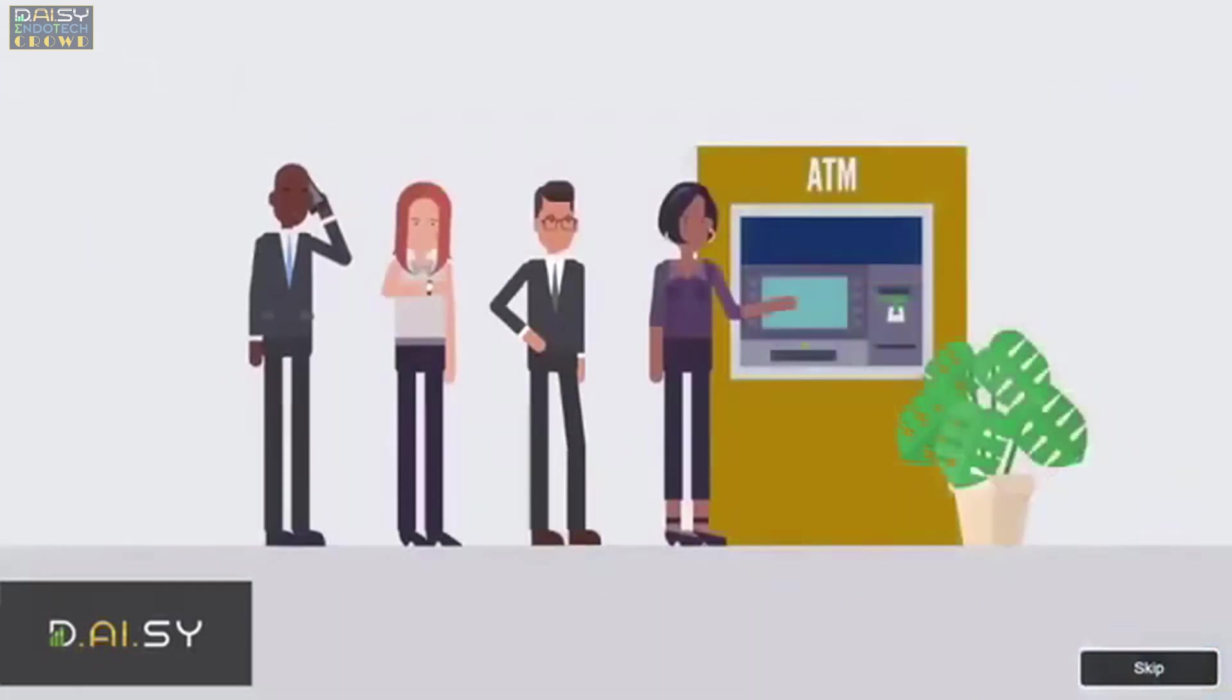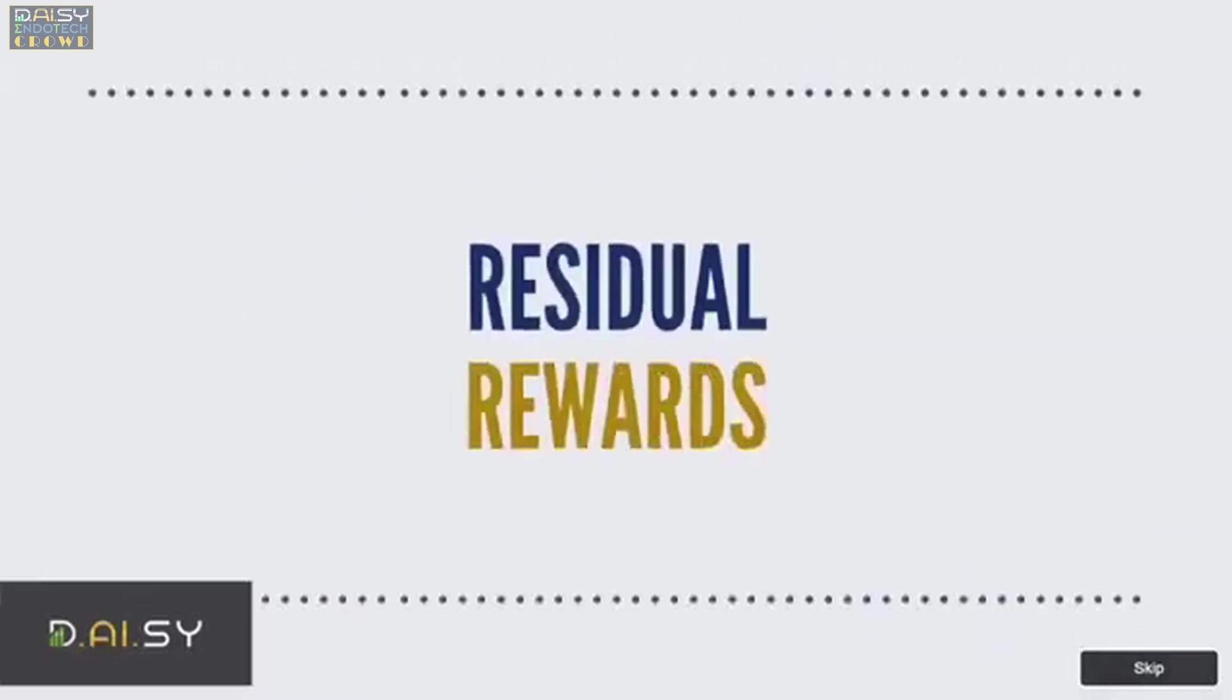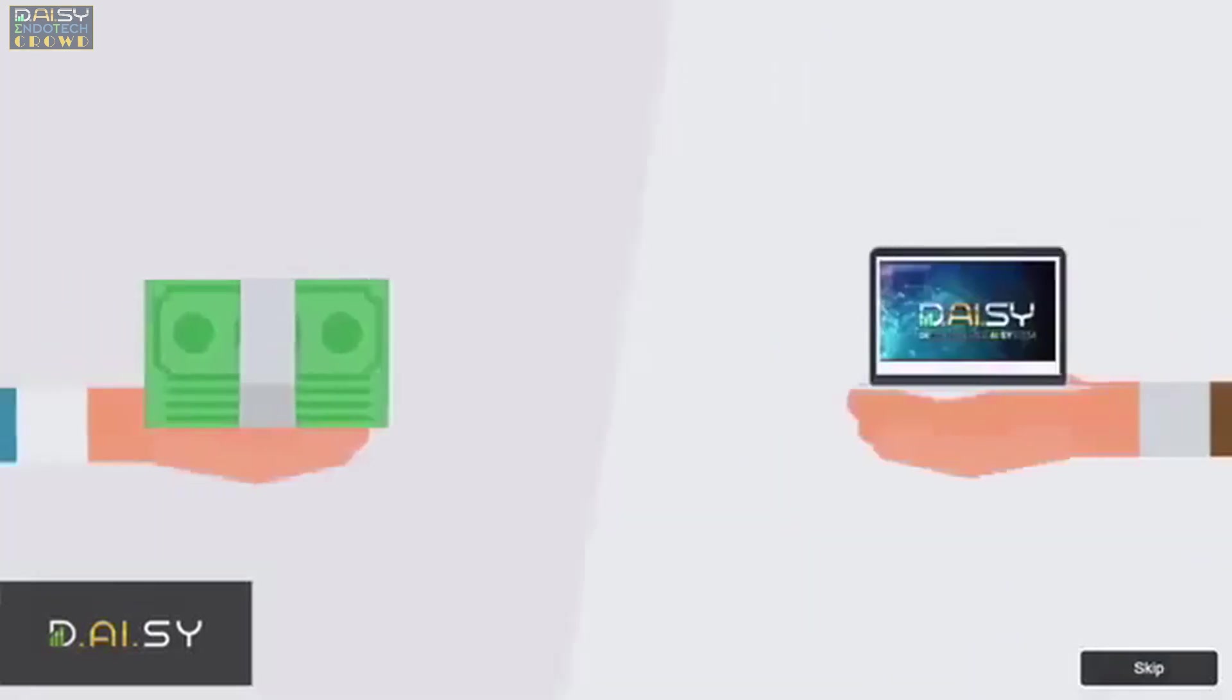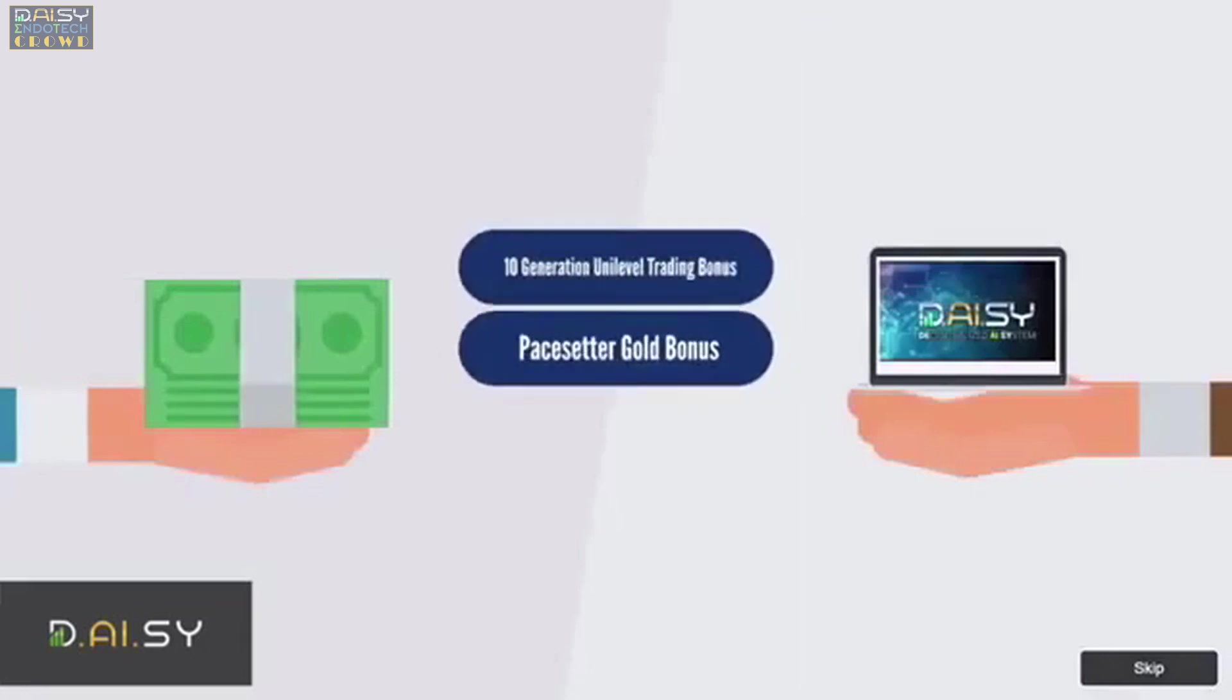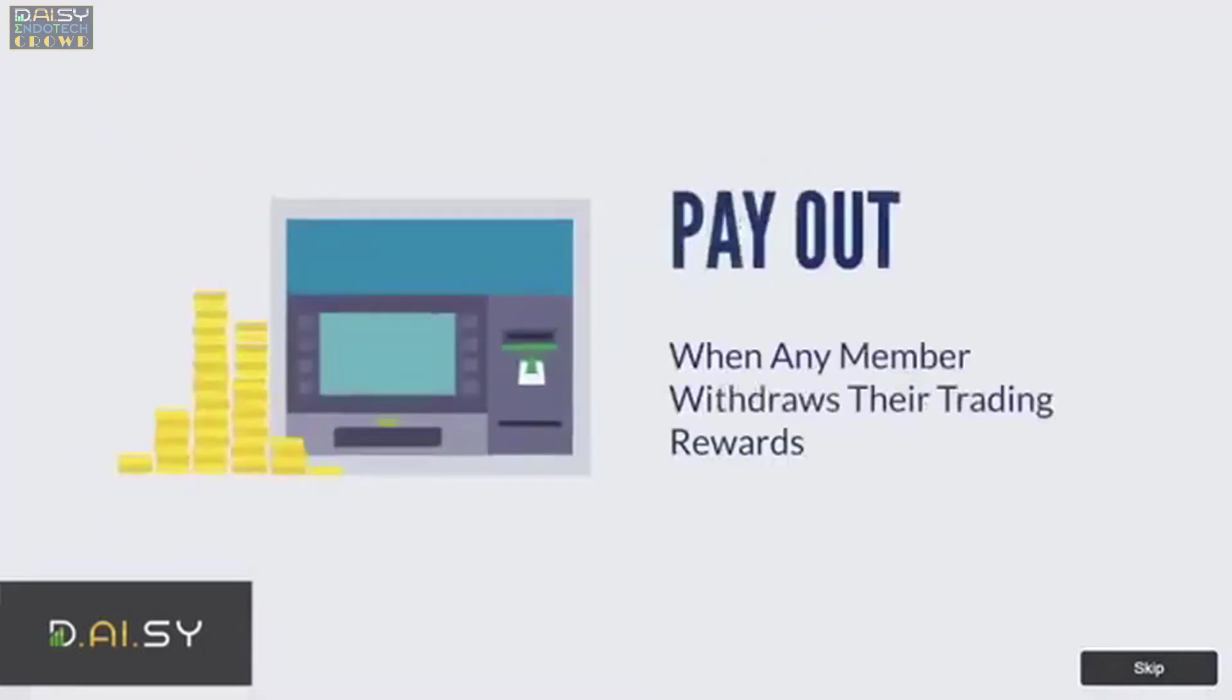Residual rewards from trading profits include the 10 generation unilevel trading bonus, pace setter gold bonus, and pace setter leadership bonus. Residual rewards pay out when any member withdraws their trading rewards.